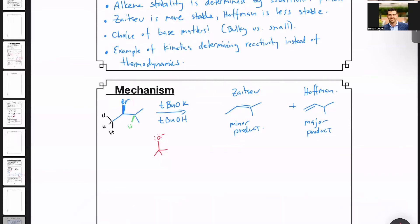If the tert-butoxide deprotonates the green hydrogen, what it can do is deprotonate the hydrogen, move the electrons onto the hydrocarbon framework, and then kick out the bromine to afford the Zaitsev product. So this one goes directly to Zaitsev.